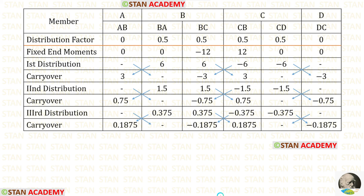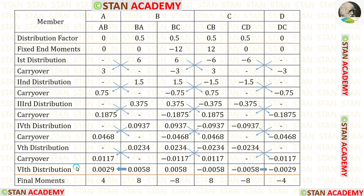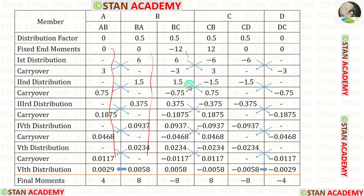In a similar way, we can do more distributions and carry overs until we are getting very small values. I have done up to the sixth distribution and stopped because I was getting very small values. In the last distribution, we give carry over only to the fixed ends. Now let us add the values to find the final moments. After adding, we get the final moments.